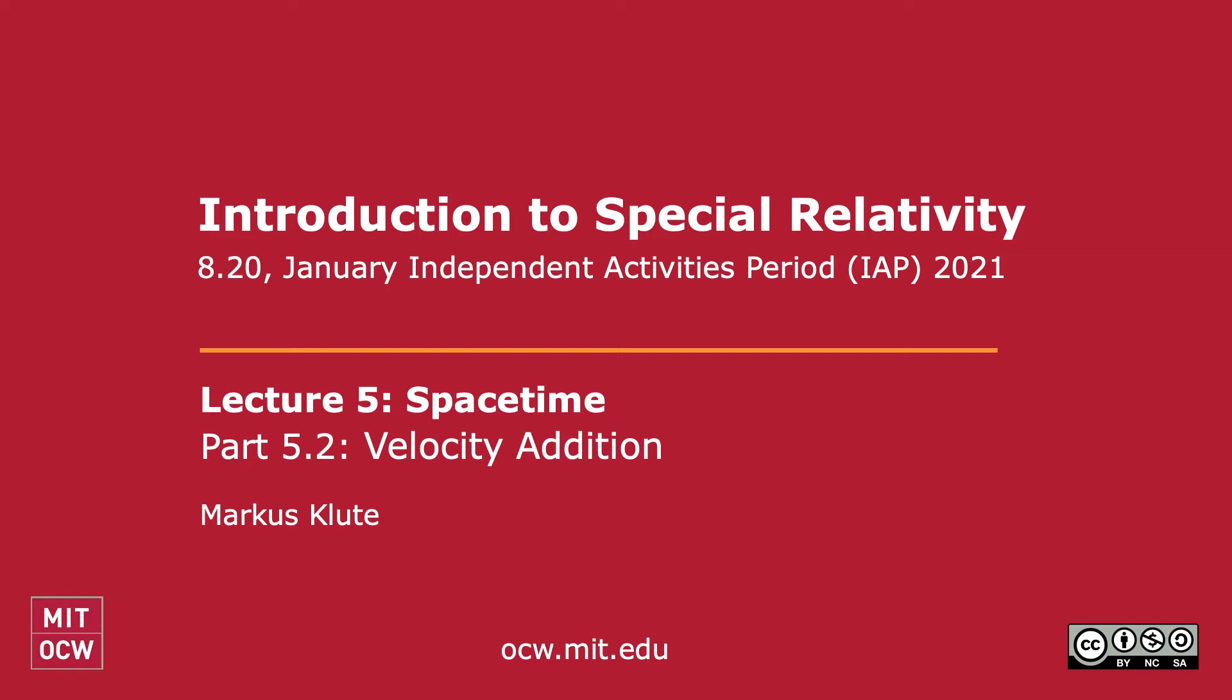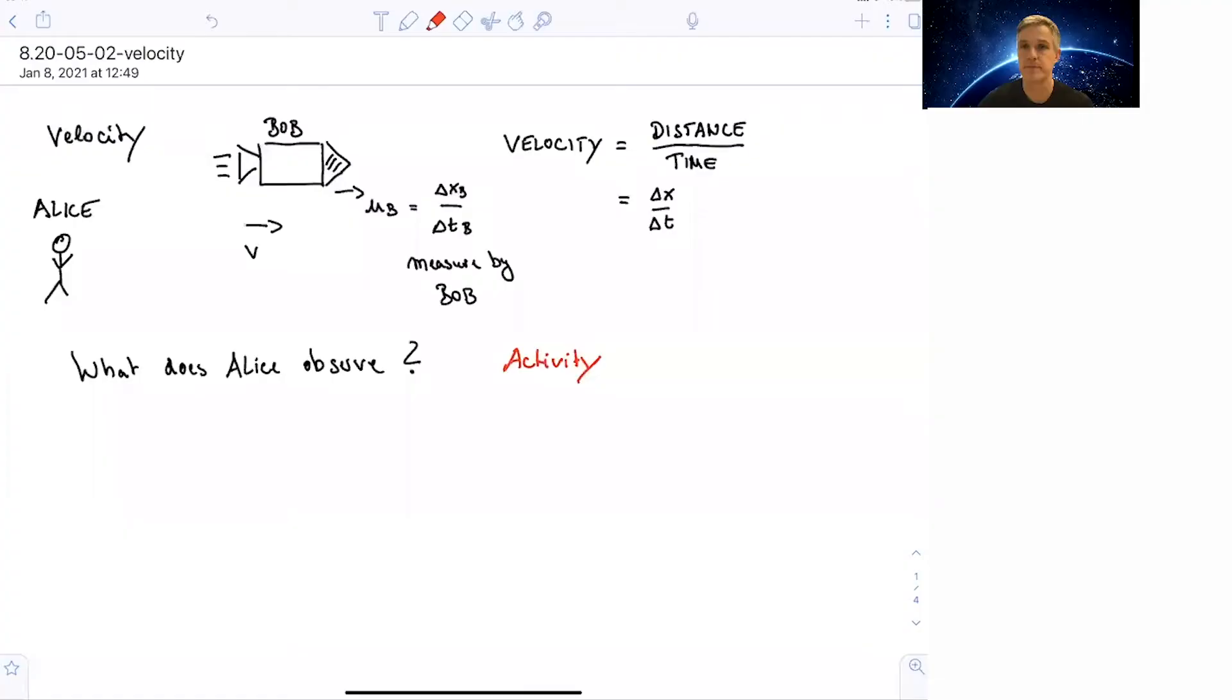Welcome back to 8.20 Special Relativity. We're going to continue our discussion of galactic space travel. The situation is slightly modified from the previous one. We still have Alice being our ground control and Bob riding on a spacecraft to explore planetary systems. This situation is different in the sense that the spacecraft has an escape rocket, able to send probes to planets.